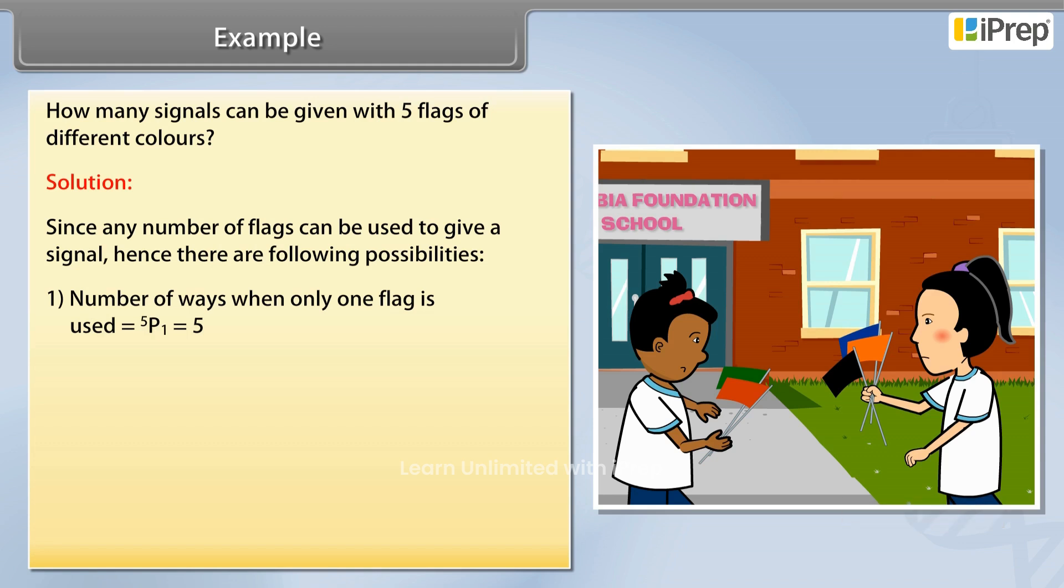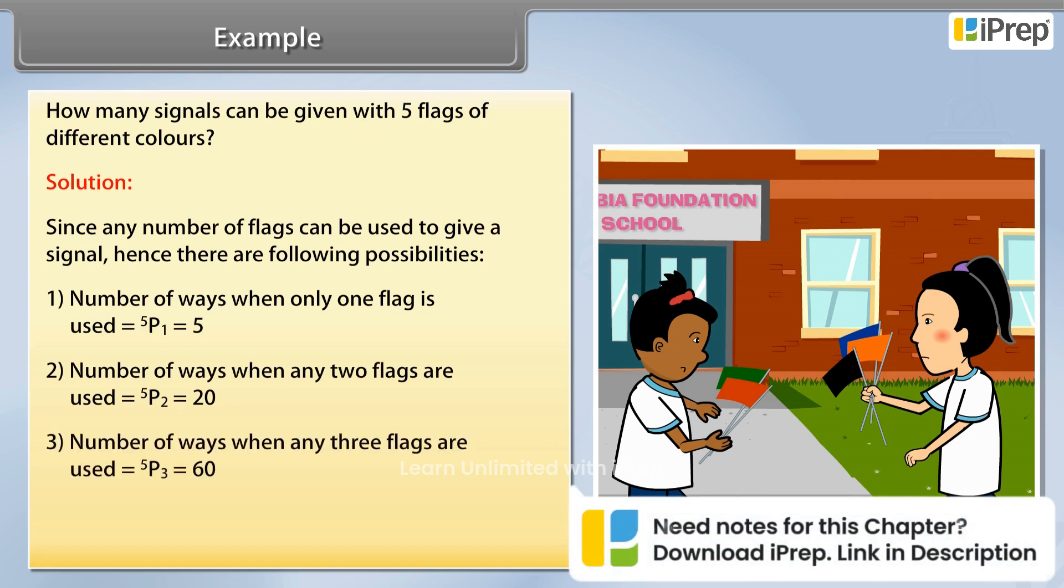is equal to 5P1 = 5. 2) Number of ways when any two flags are used is equal to 5P2 = 20. 3) Number of ways when any three flags are used is equal to